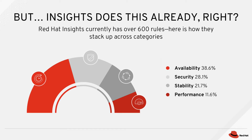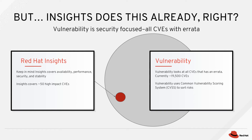Insights can detect all of these types of issues and offer automated remediations. But when comparing to just security concerns, Insights covers only about 50 high-visibility or celebrity CVEs, while Vulnerability covers all known CVEs with errata, currently approaching 20,000. Insights also uses a proprietary scoring system, while Vulnerability uses the standard Common Vulnerability Scoring System, or CVSS, to score risks.